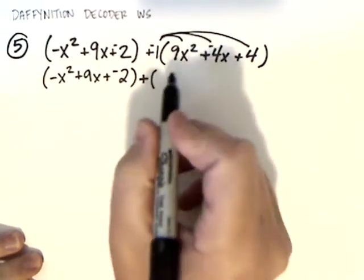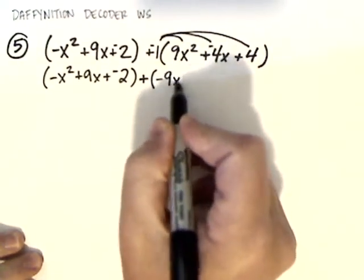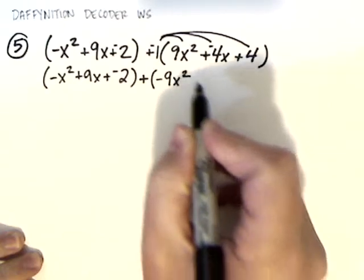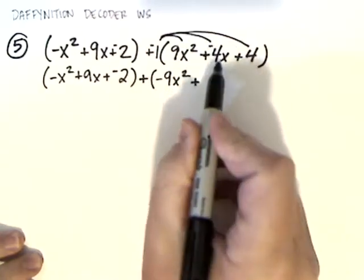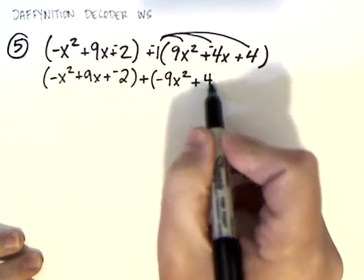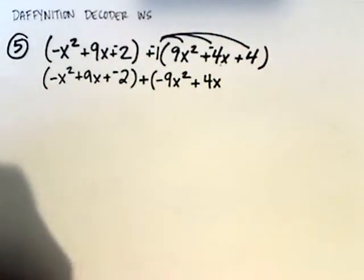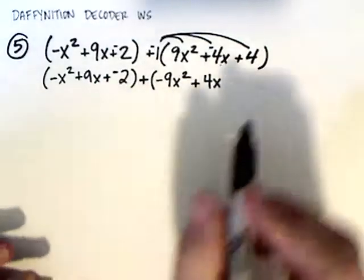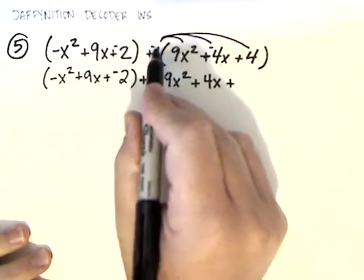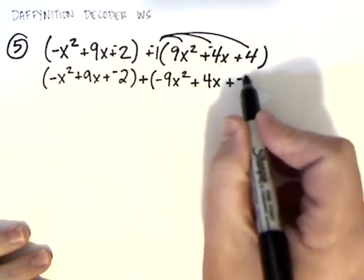So, negative 1 times 9x squared gives me negative 9x squared plus negative 1 times negative 4x gives me positive 4x. Remember, multiplying by negative 1, all it does is change the sign of the thing you're multiplying. Plus, a negative 1 times a 4 gives me a negative 4.